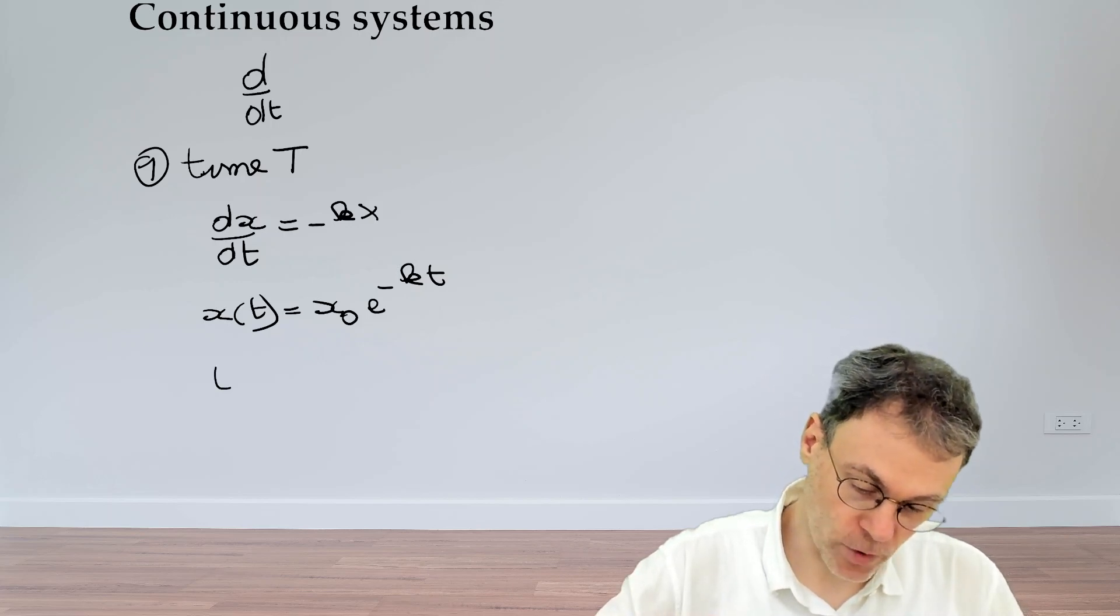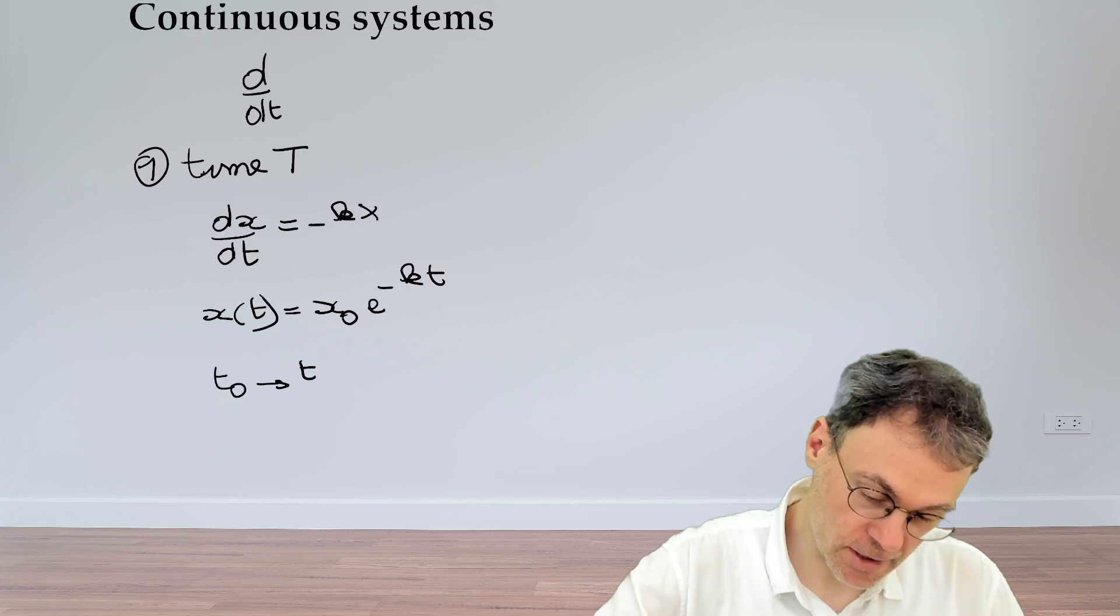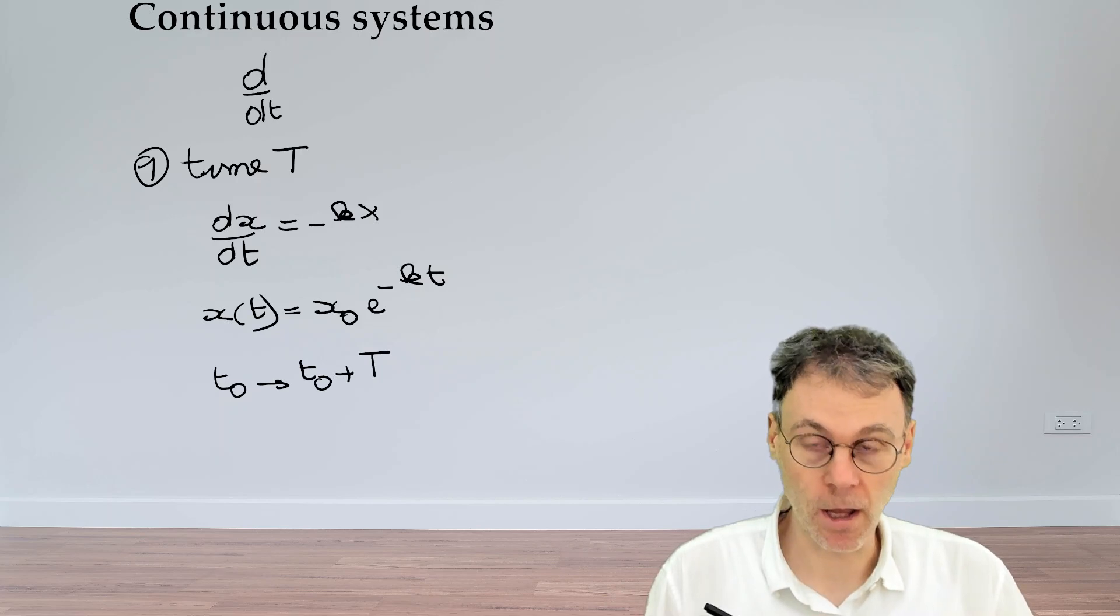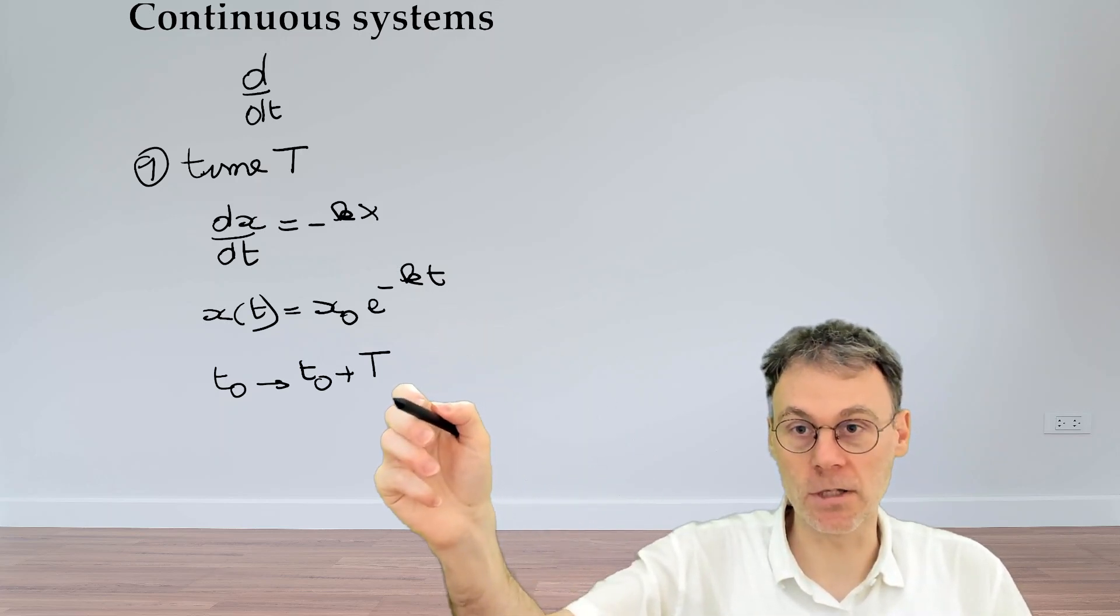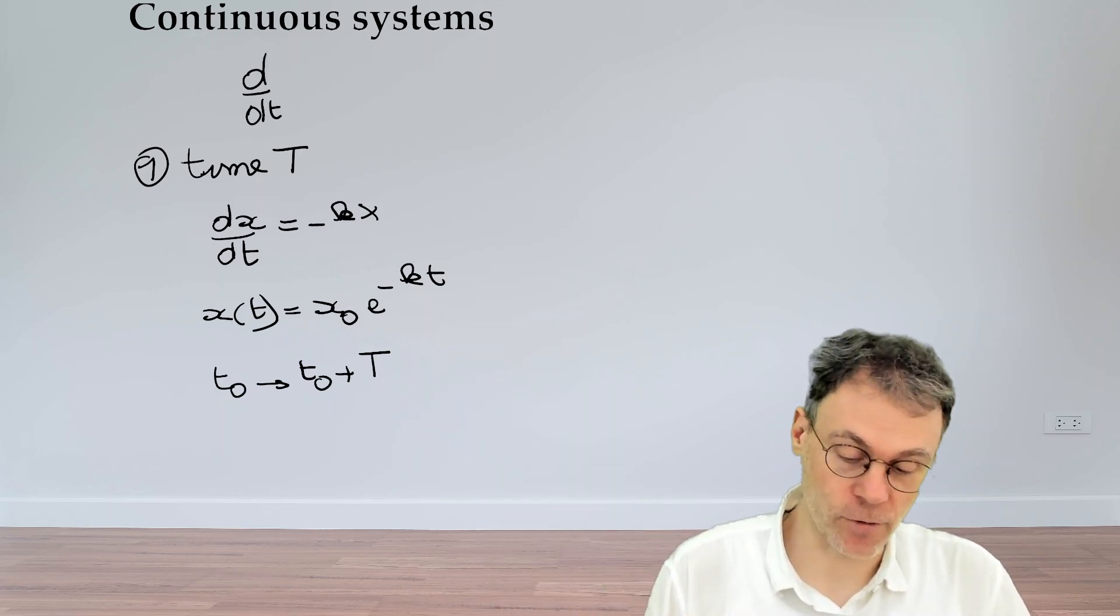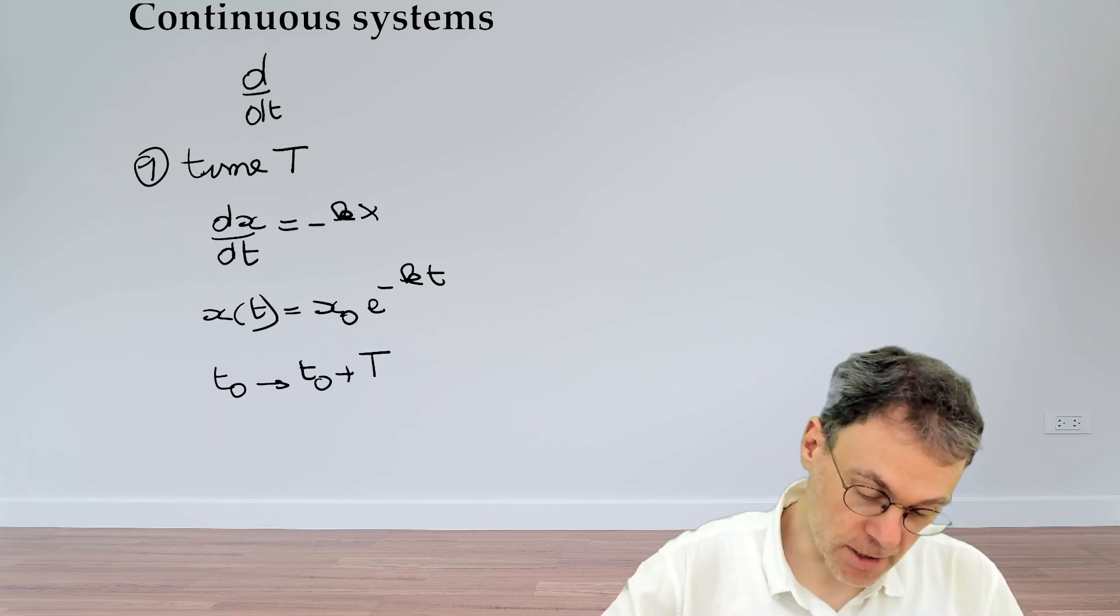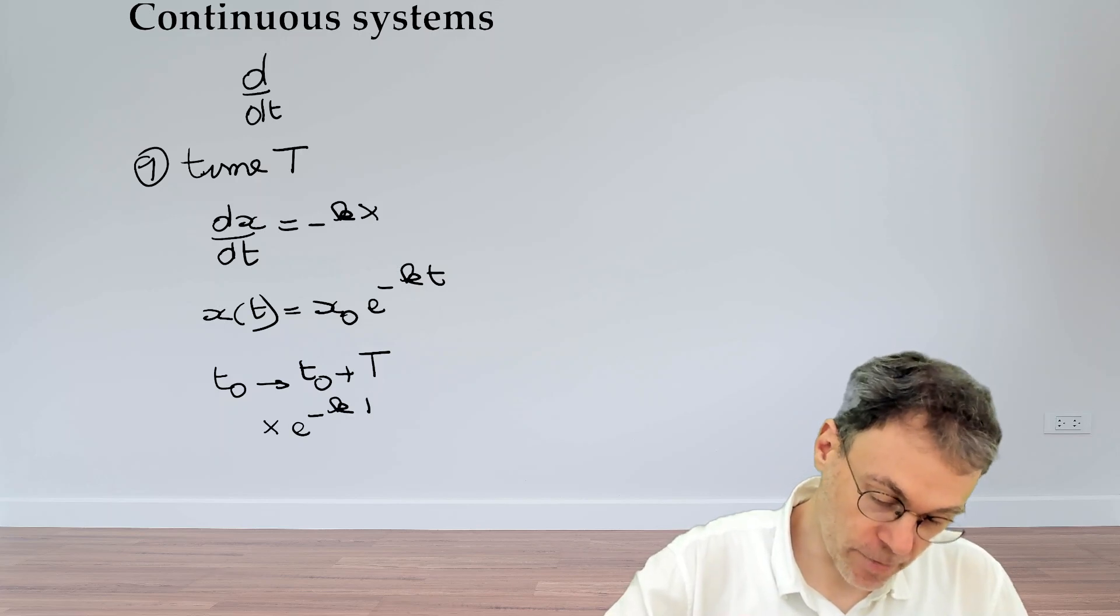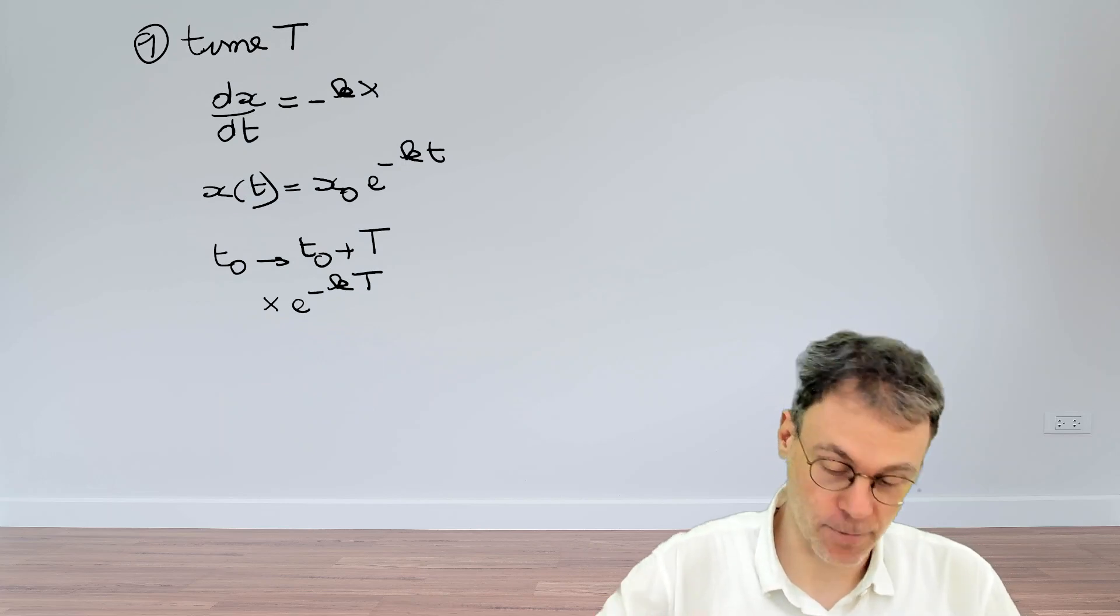So what happens if we try and turn this into a discrete time map? If you look, for example, what happens when we move from a time instance t0 to a next time instance t0 plus our time interval big T? Because of this exponential, if you substitute t0 plus T inside this exponential, this will turn into a product. Basically what happens if you want to move from t0 to t0 plus T is that the state will get multiplied by an exponential minus k big T.